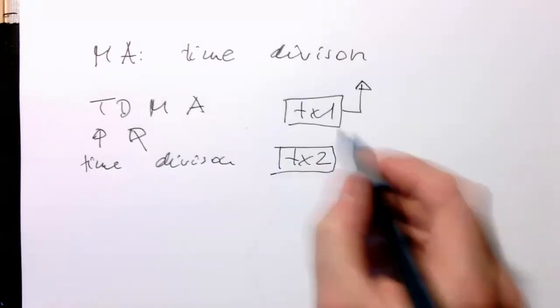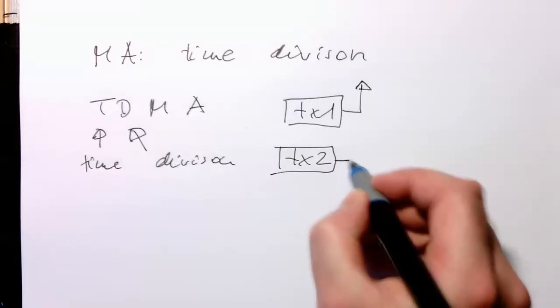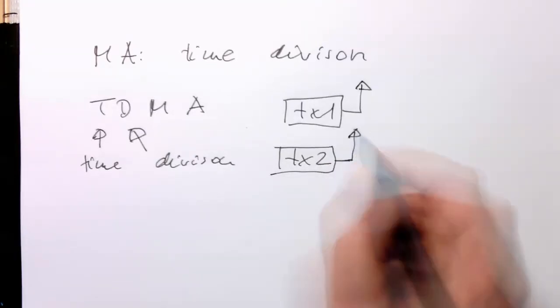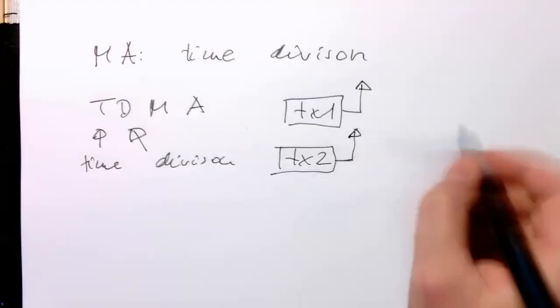once transmitter one is finished with their argument, transmitter number two starts talking, and then this is swapped.